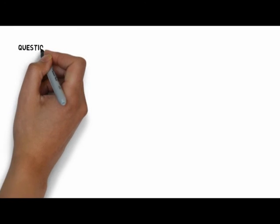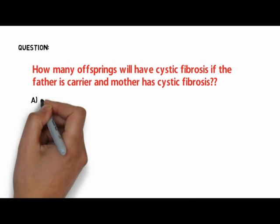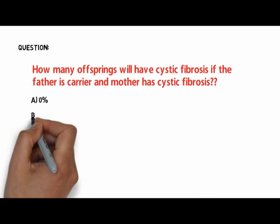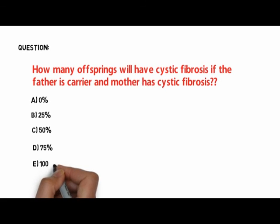Now the question for all of you. Do leave your answer in the comment section below. The question is: How many offspring will have cystic fibrosis if the father is a carrier and the mother has cystic fibrosis? Option A: 0 percent, B: 25 percent, C: 50 percent, D: 75 percent, or E: 100 percent?